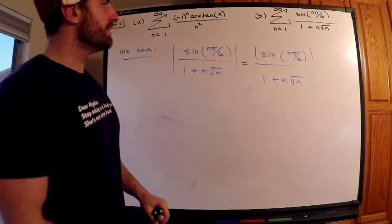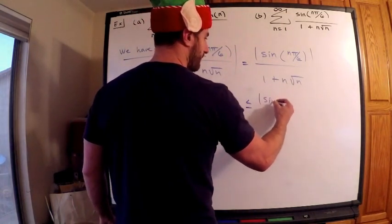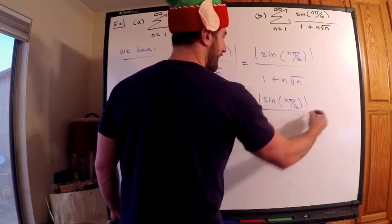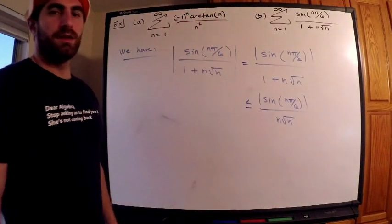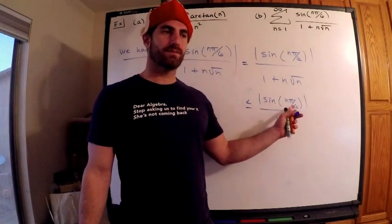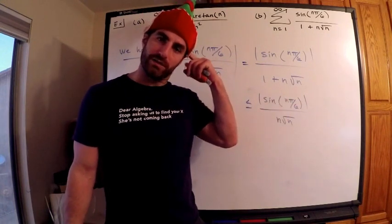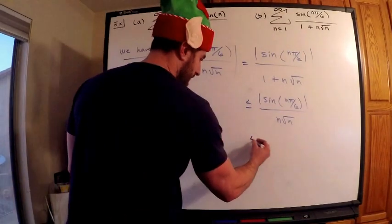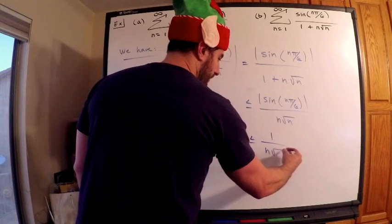Okay? The number itself gets larger, which means this is less than or equal to the absolute value of sine n pi over 6 divided by n square root n. But now, get rid of sine. Again, it doesn't matter what the argument is. Sine is bounded above by 1. In other words, the range of sine is in negative 1 and 1. It doesn't matter what the argument is. This is less than or equal to 1 divided by n square root n.